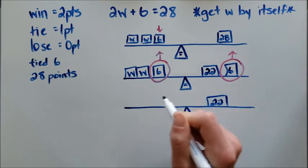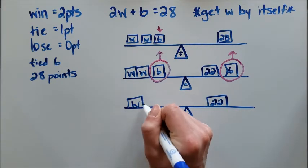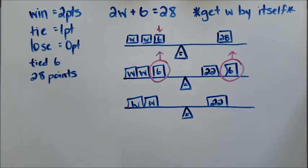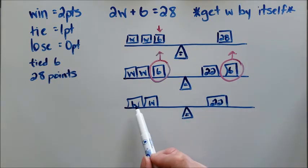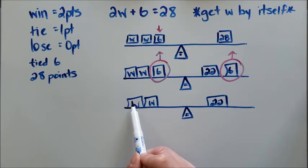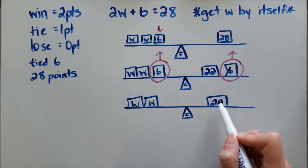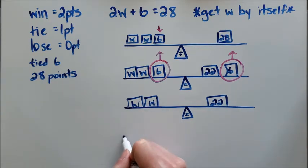That little equal sign. I have 22 on this side and I have two W's on that side. So now I want to see what one W is worth. So I'm going to break this part here up into two equal sizes because if this is W and this is W, I need two blocks over here that are worth the same amount.